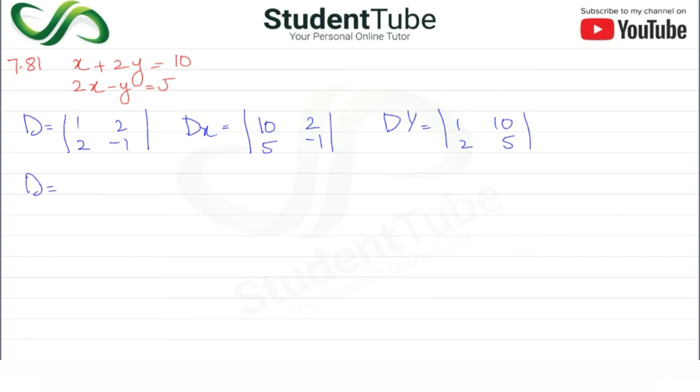Now let's find D. 1 multiply by minus 1, then minus 2 multiply by 2. So minus 1 minus 4, this becomes minus 5.